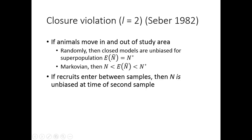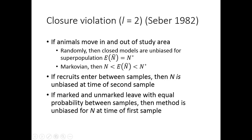If recruits enter between the samples, then population size is unbiased at the time of the second sample. If marked and unmarked animals leave with equal probability between the samples, then the method is unbiased for population size at the time of the first sample.